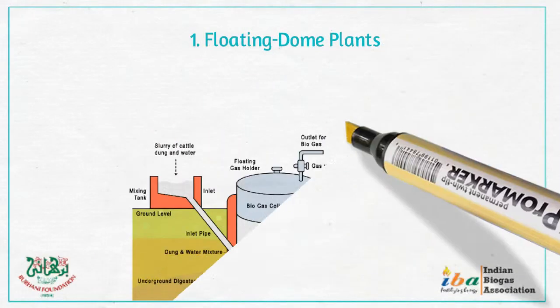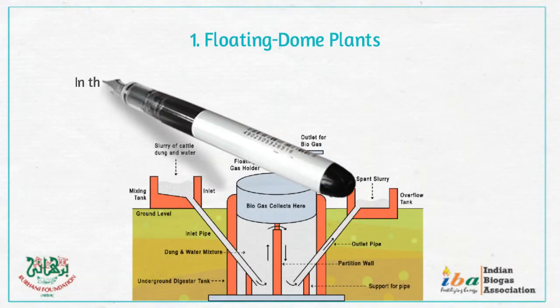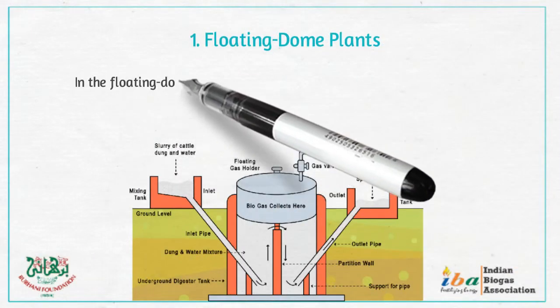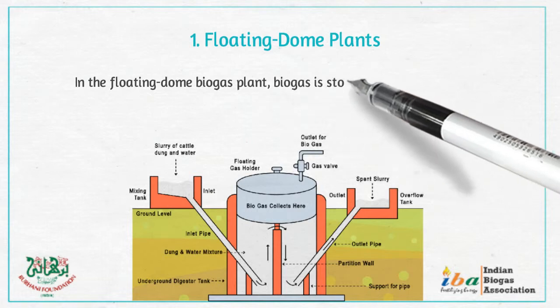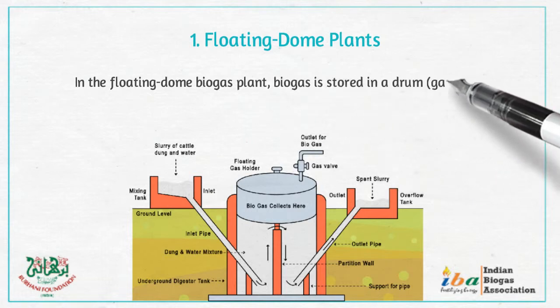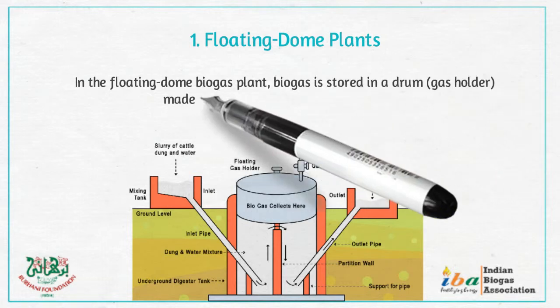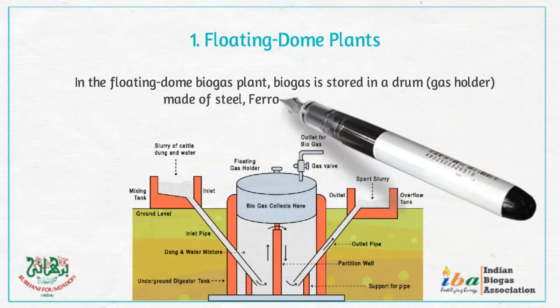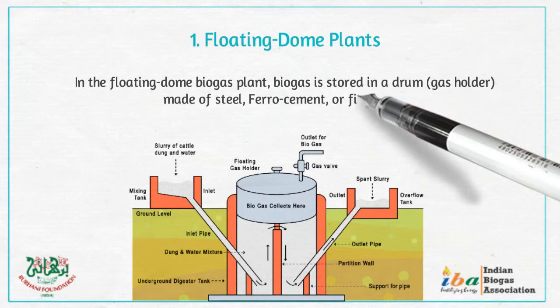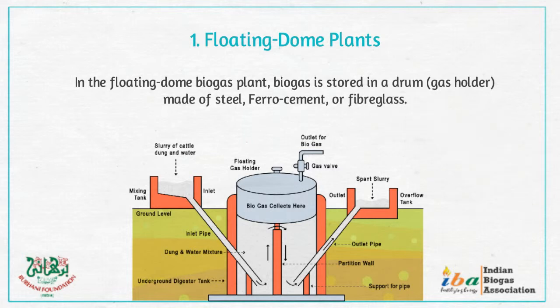1. Floating Dome Plants. In the floating dome biogas plant, biogas is stored in a drum — a gas holder — made of steel, ferro-cement, or fiberglass.